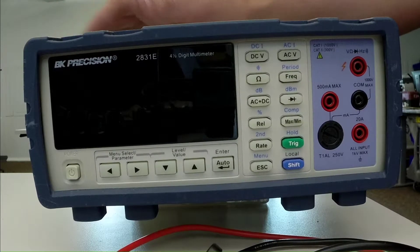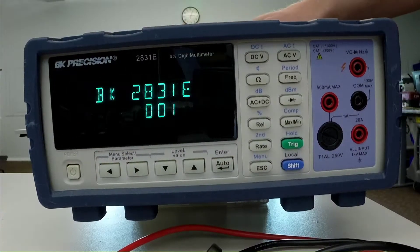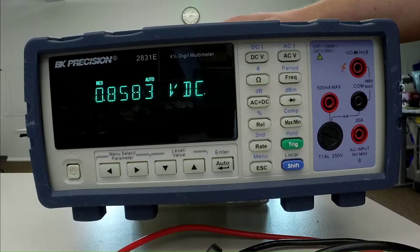So the first thing that we have to do is we have to turn it on, power button's down here, and we'll let the multimeter turn itself on, and we'll need to connect some test leads.